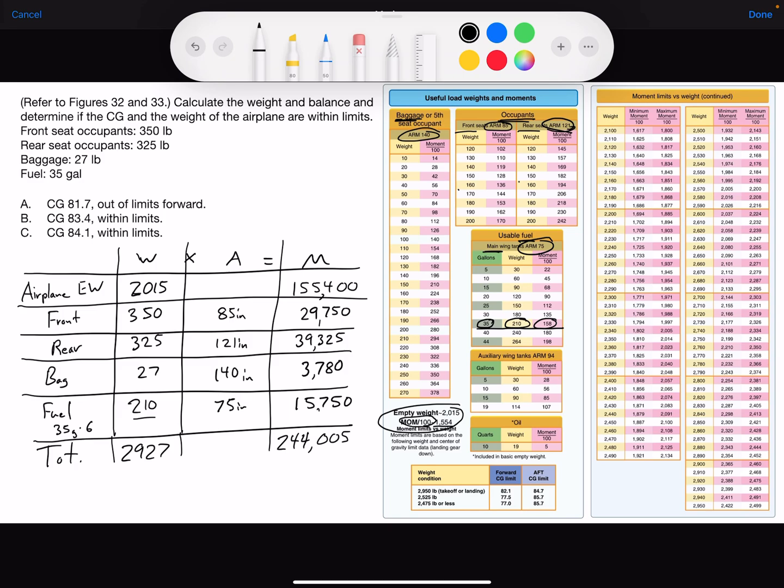Here's the center of gravity equation. CG, center of gravity, equals the total moment divided by total weight. Here's the total moment right there, divided by the total weight. And you should get approximately 83.4 inches.